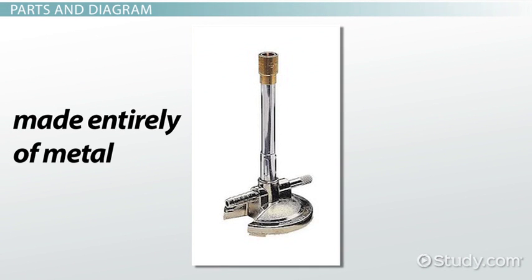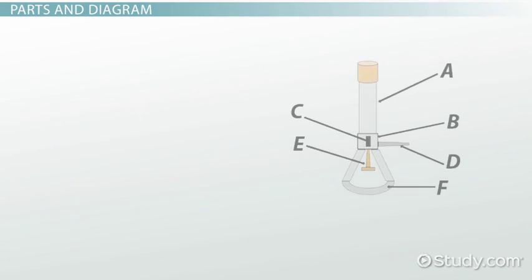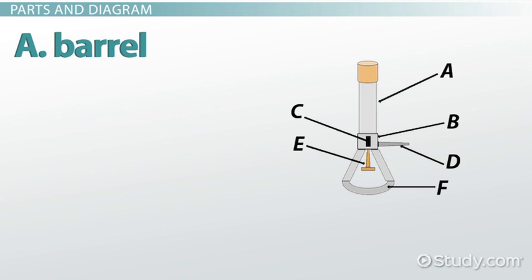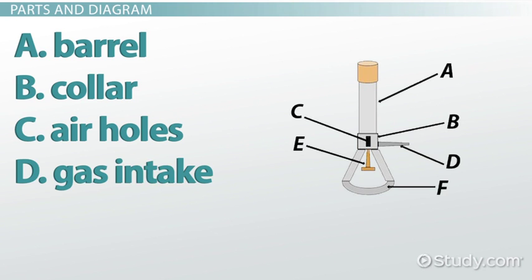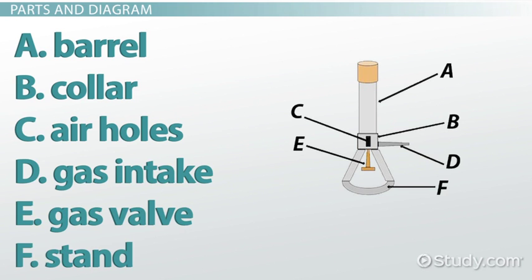A Bunsen burner is made entirely of metal. In order to function properly, Bunsen burners must have a barrel that's approximately 5 inches long, a collar with air holes, a gas intake and gas valve, and a stand to keep all of the pieces from making contact with a work surface.